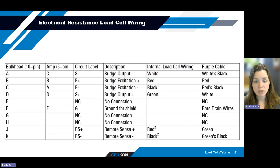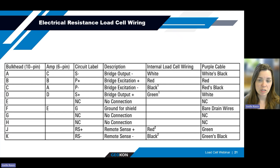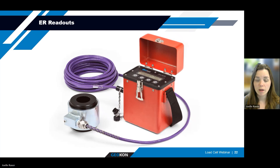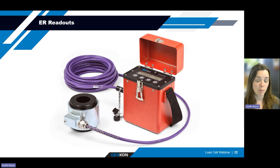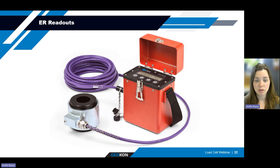Signal cables from the electrical resistance load cell have either a 10-pin connector or bare leads on the monitoring end. Shown in this table and provided in the load cell manual is the wiring information for each of the leads in the signal cable. Whether or not you use a 10-pin or bare leads is really up to you and the type of readout that you plan to use. For manual measurements of the electrical resistance load cell, our GK502 readout box can be used, allowing direct connection of a 10-pin connector from the load cell into the readout box. The readout can be configured to output raw values in millivolt-to-volt digits, or engineering units in pounds, kips, kilonewtons, and other units, once the load cell gauge factor and field zero values are entered into the readout box.